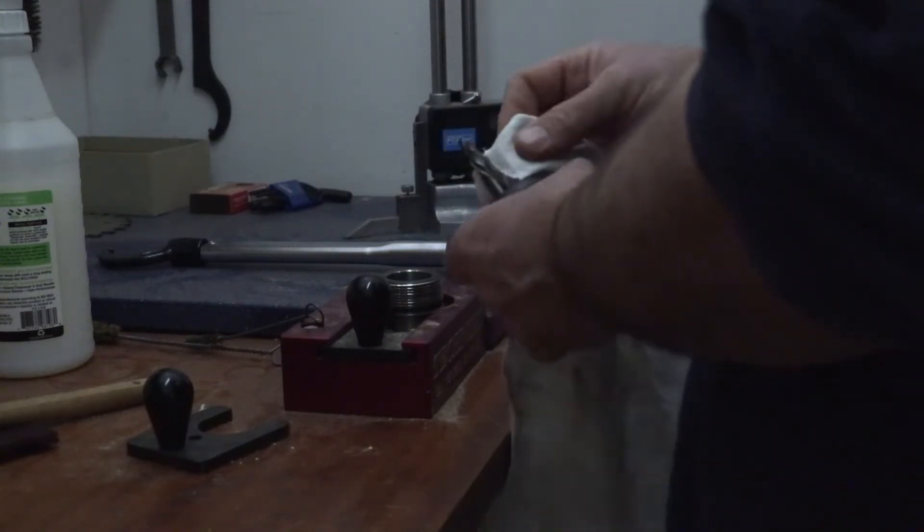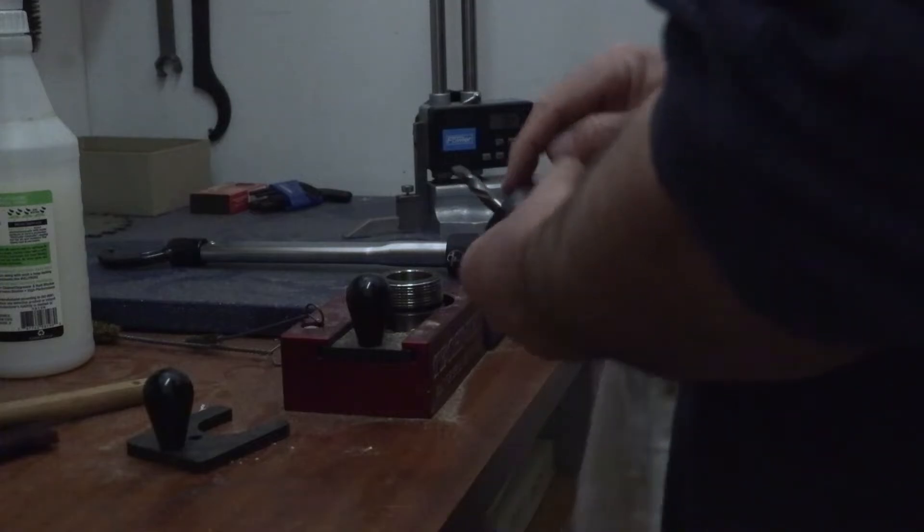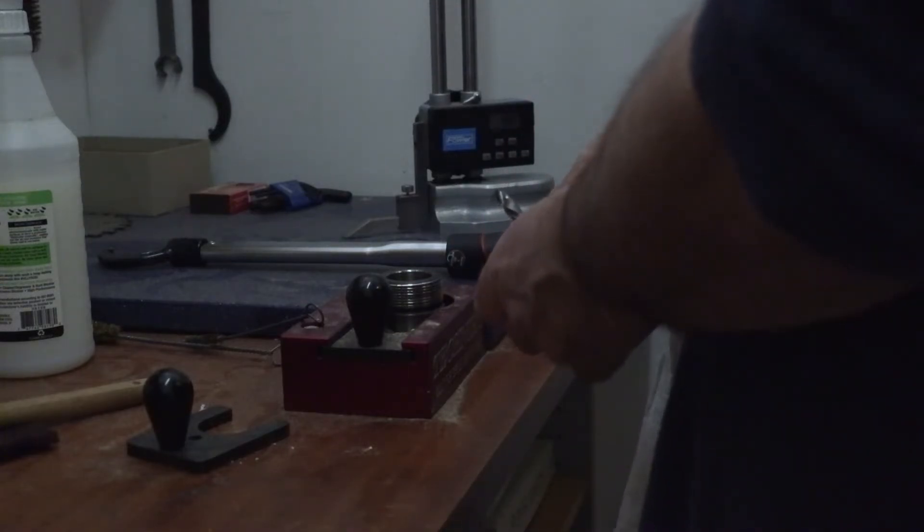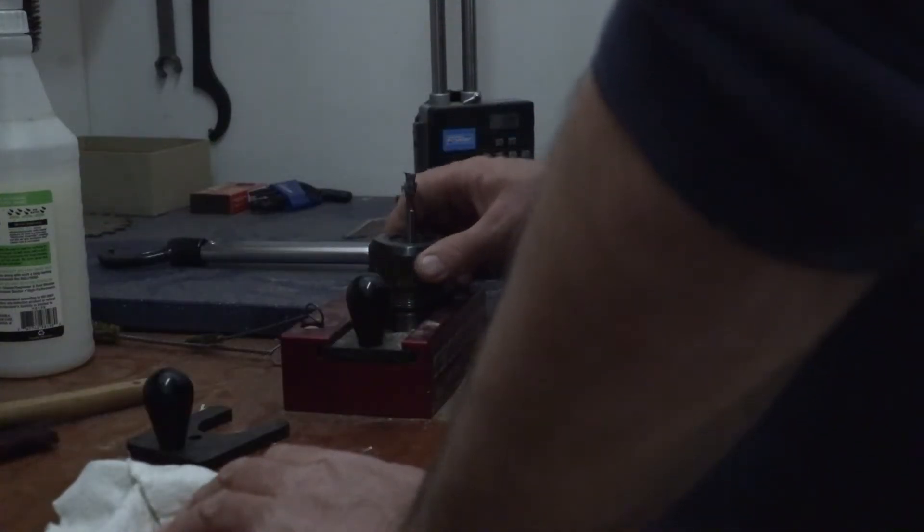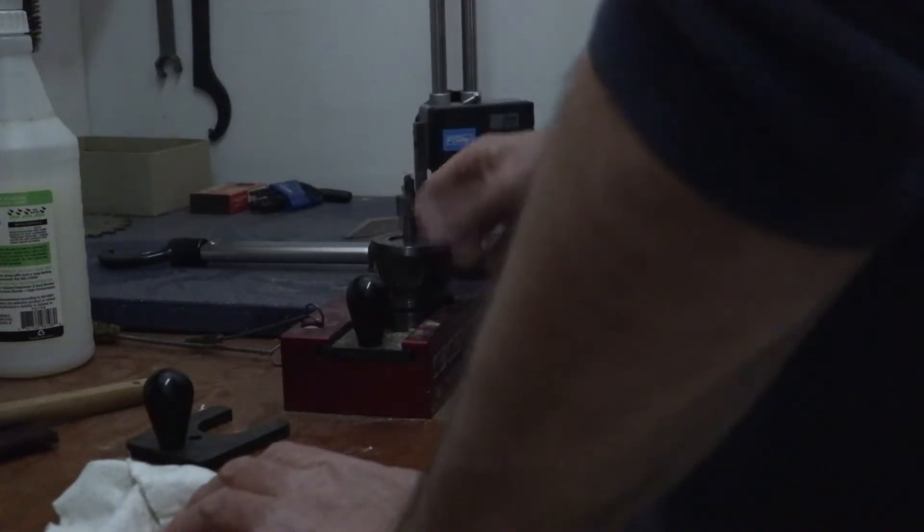We're having a little bit of extra length hanging out. You do not want to clamp onto the flutes. Once the flutes have started, that's not a good spot for us to be clamped. So we want to make sure the flutes are entirely outside of the collet.